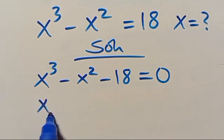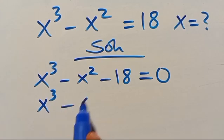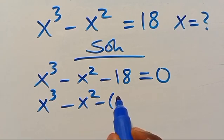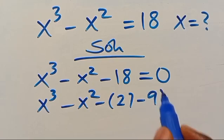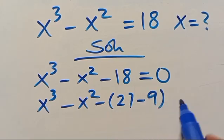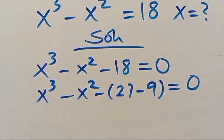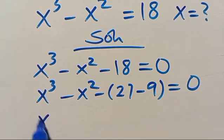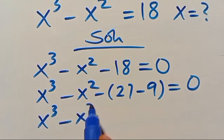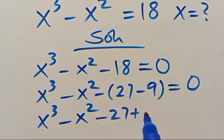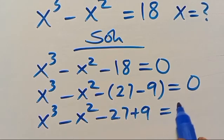From here we have x to the power of 3 minus x squared. Because we can have 18 expressed as 27 minus 9 — and 27 minus 9 will give us 18. So here will be x to the power of 3 minus x squared, then minus 27, then plus 9, equals zero.